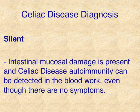We have to be thinking at all times about the cause, not just treating the symptoms. The silent form of celiac disease is one where intestinal mucosa damage is present and celiac autoimmunity can be detected in the blood work, yet there are no physical symptoms that anybody's reporting. Similar to what we see with osteoarthritis — where some people have pain and some don't — this is true of most diseases: there is a silent form of them.